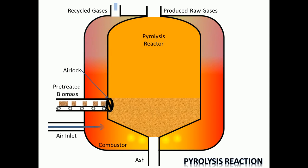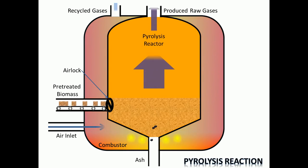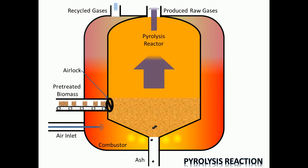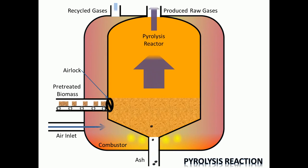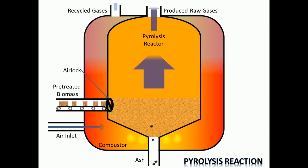The second step is the pyrolysis reaction. The pre-heated biomass is introduced into the pyrolysis reactor, which contains an airlock to keep oxygen and unwanted air out of the reactor. The combustor preheats the pyrolysis reactor and heats the biomass indirectly.